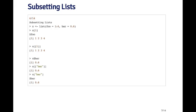If I use the double bracket — x double bracket one — what I get back is just the sequence one through four. So the difference here is that in the first example I got a list that contained the sequence one through four, and in the second example I got just the sequence. That's the difference between the single bracket and the double bracket operator.